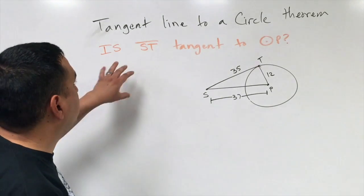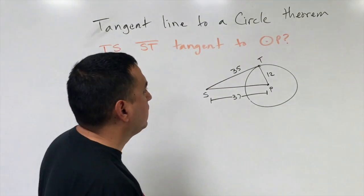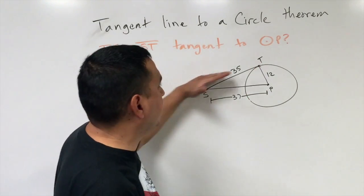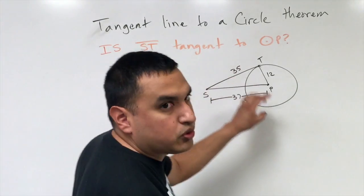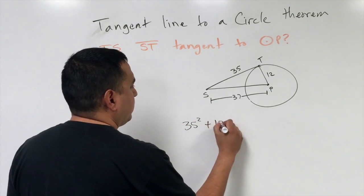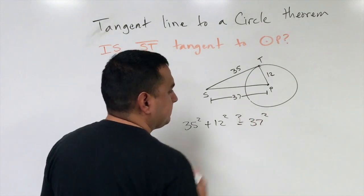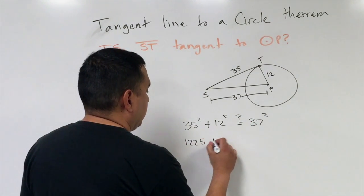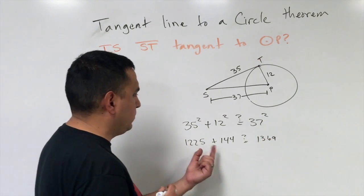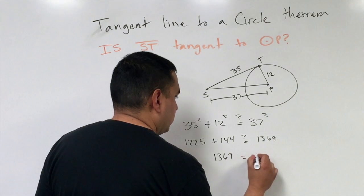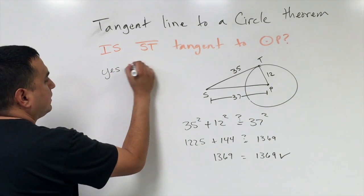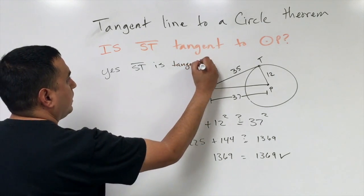Using the tangent line theorem, we check whether segment ST is tangent to circle P. SP and TP are radii, and ST is the line in question. Since it forms a triangle, we test with the Pythagorean theorem: is 35² + 12² = 37²? We get 1225 + 144 = 1369, and 37² = 1369. Yes, they are equal, so segment ST is tangent to circle P.